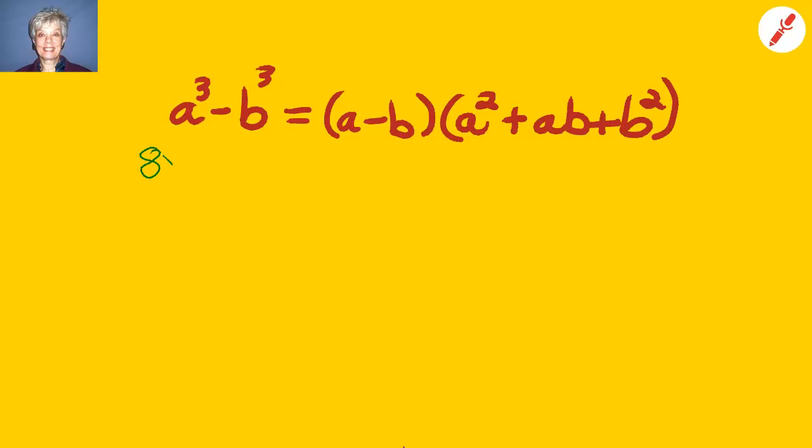Now we're going to look at the difference of two cubes. And that formula is a to the third minus b to the third equals quantity a minus b times quantity a squared plus ab plus b squared. You're not going to use it a lot, but you will use it sometime. So you've got to know it.